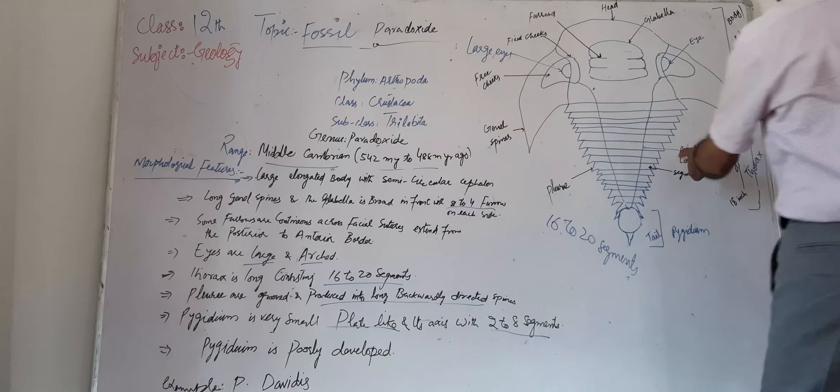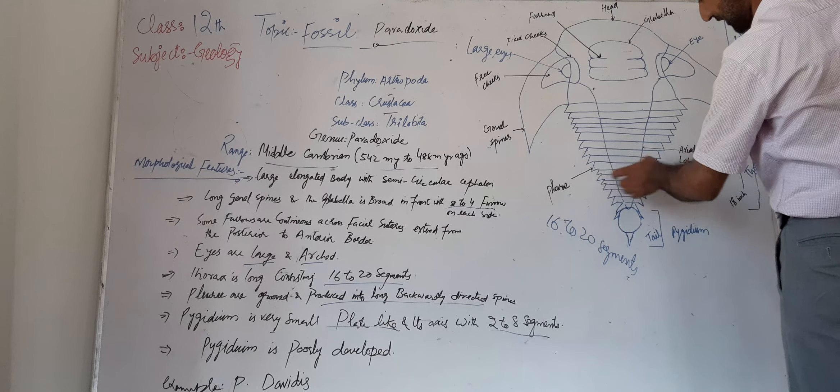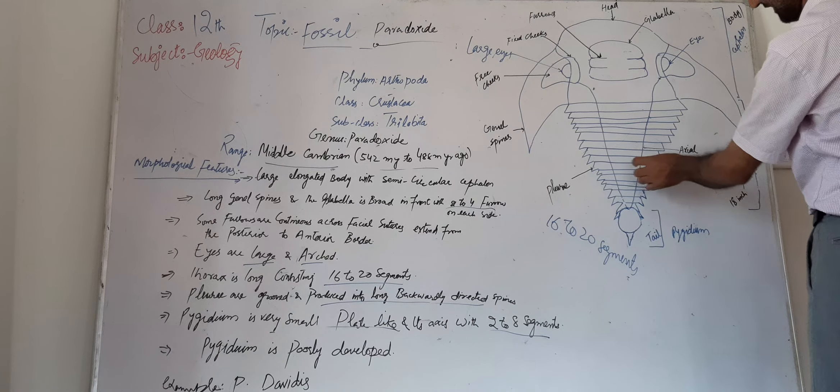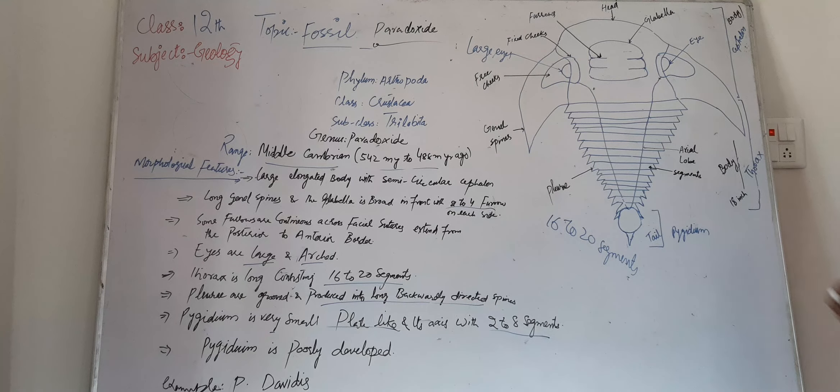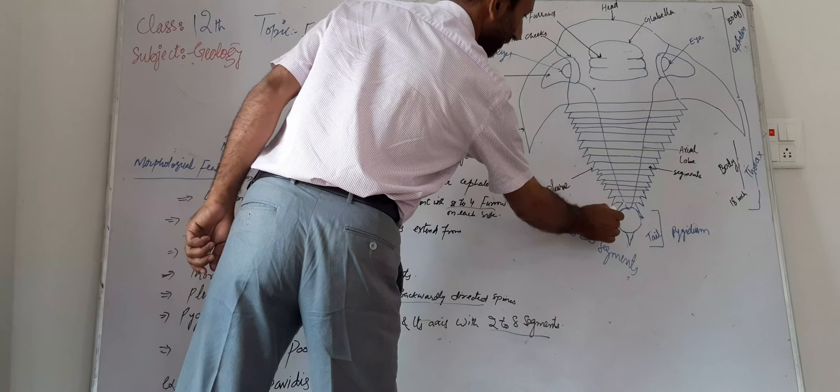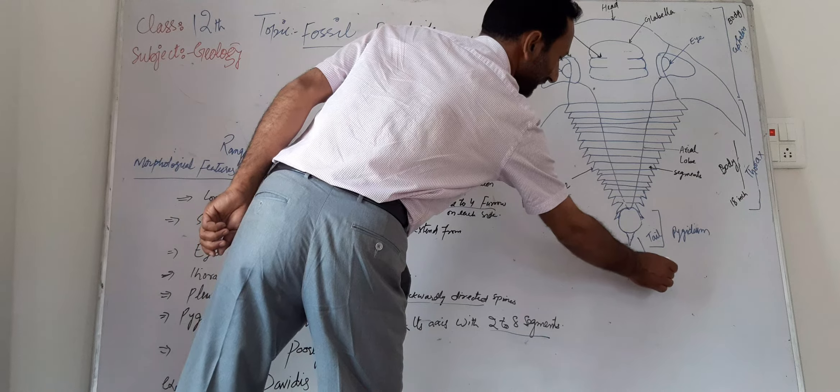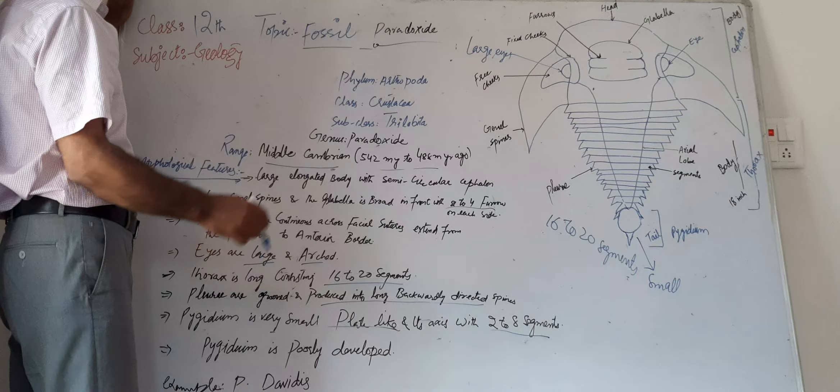It has an almost 18-inch body. The axial lobe is visible and the pleural segments—these lateral portions of this shell—are produced into long backwardly directed spines.